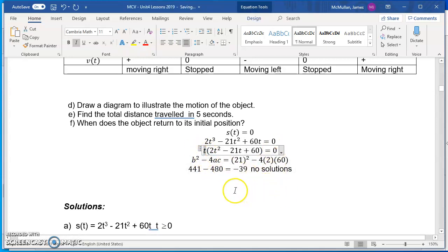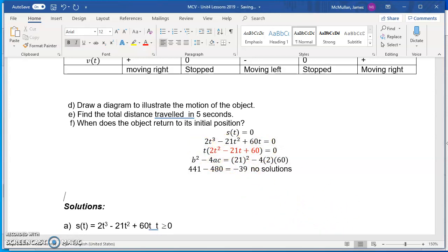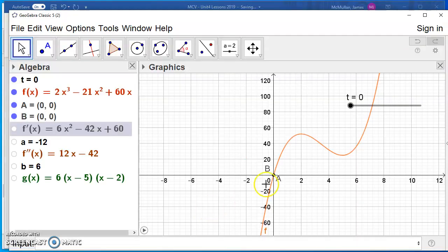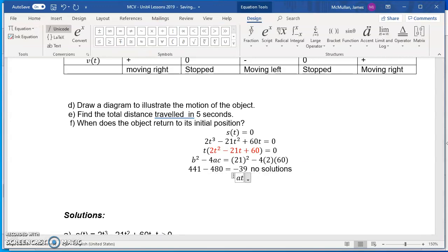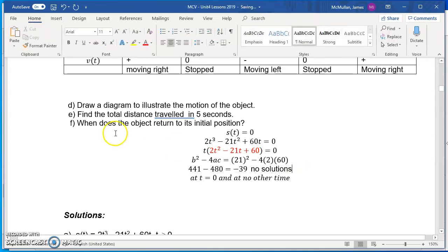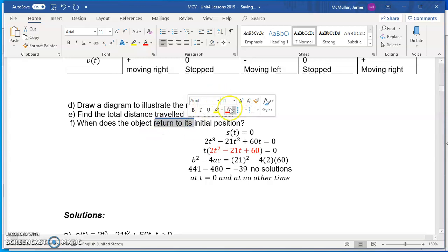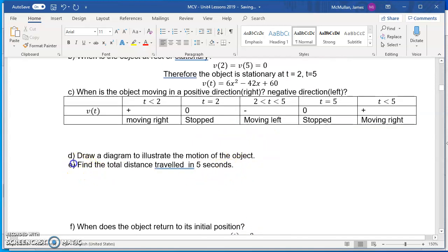So that would be basically, and again, this is consistent with the picture that we have of the way this object moves. It moves to the right. Let's just go back and watch it quickly one more time. It moves to the right, stops, moves to the left, stops, and then moves to the right again. And then it just keeps going in that direction. And that's what we've said here from an analysis of its derivative graph.